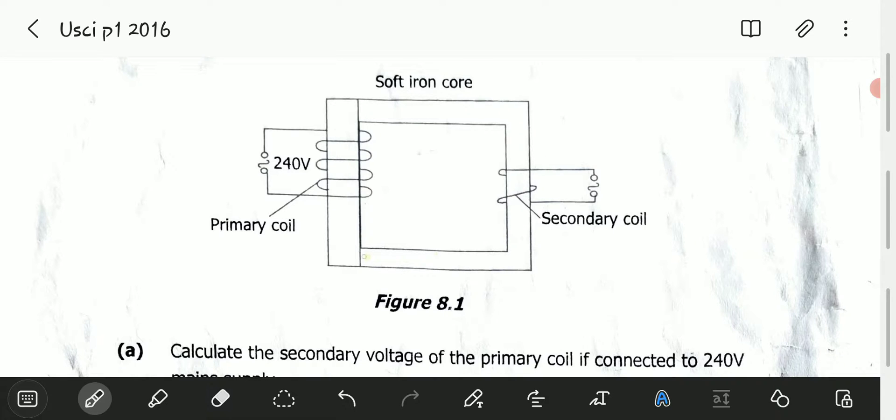What joins them is soft iron, called the soft iron core. The basic principle behind a transformer is mutual induction.